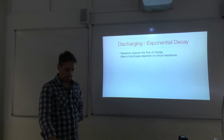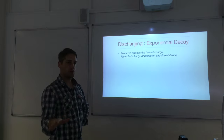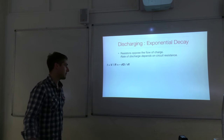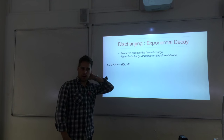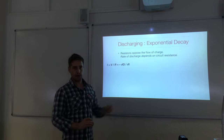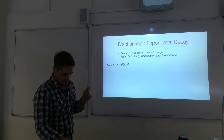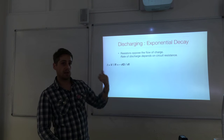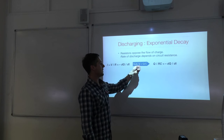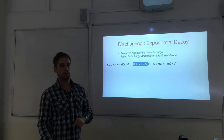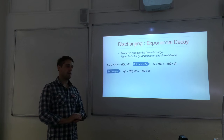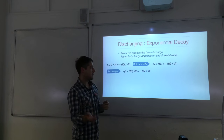Resistors in the circuit oppose the flow of charge, so the discharge process is also a function of resistance. Current is voltage over resistance, and current is defined as the rate of flow of charge. There's a negative sign because this is discharging — the current is decreasing with time. We substitute using the capacitor equation, V equals Q over C, giving us Q over RC equals minus dQ/dt.